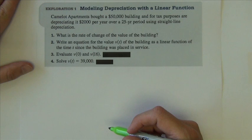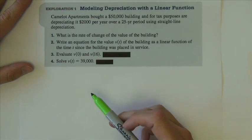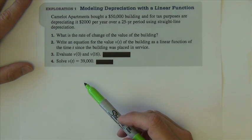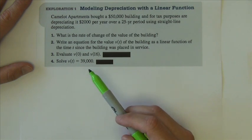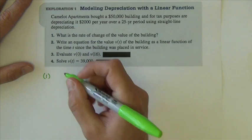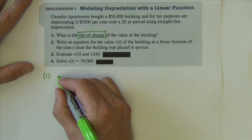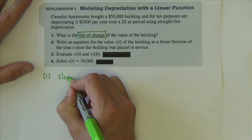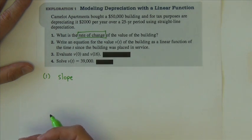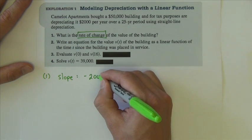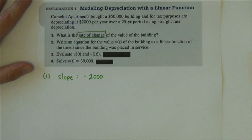This exploration problem is an example of linear modeling. Camelot Apartments bought a $50,000 building and for tax purposes are depreciating it at $2,000 per year over a 25-year period using straight-line depreciation. The question asks for the rate of change of the value of the building. Anytime you see rate of change, you're talking about slope — the building is losing $2,000 per year, so the rate of change is negative $2,000.